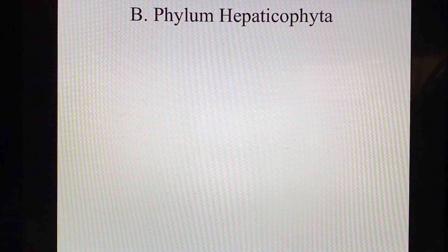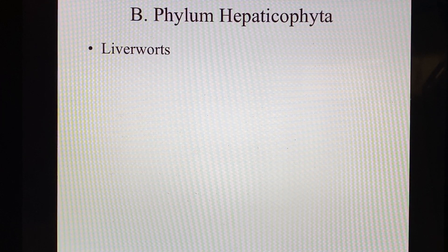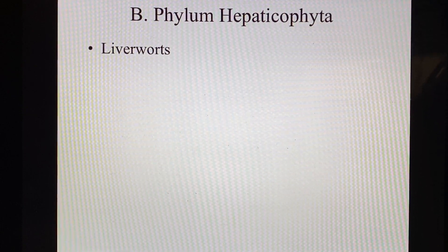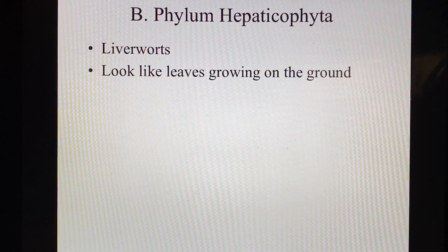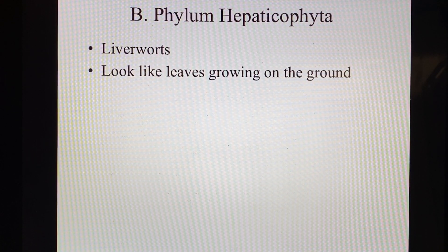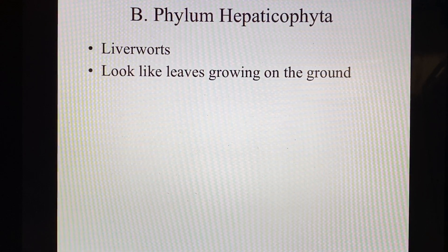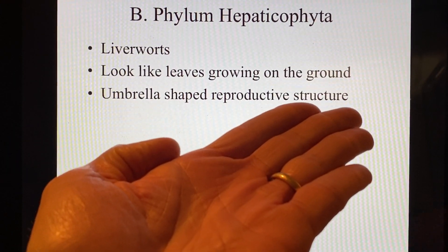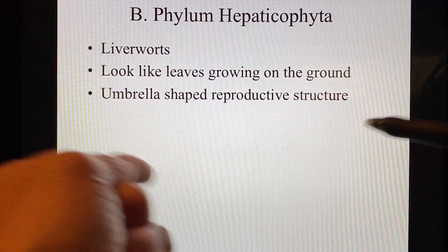The next group is called the phylum Hepaticophyta — you can pronounce it either way. These are liverworts. Now if you hunt turkeys like I do and you've been out, you have seen these. Liverworts — and they're not warts like the viruses that cause lesions on your skin, that's not the same thing. They actually look like leaves growing on the ground, and a lot of people think they're leaves that have fallen off of trees, especially if they're not reproducing. They have umbrella-shaped reproductive structures — there's going to be a flat leaf surface and then a reproductive structure going out of that leaf that looks like an umbrella. It's really cool.